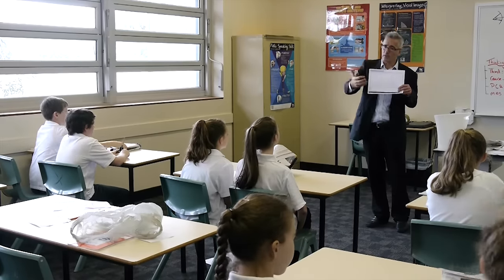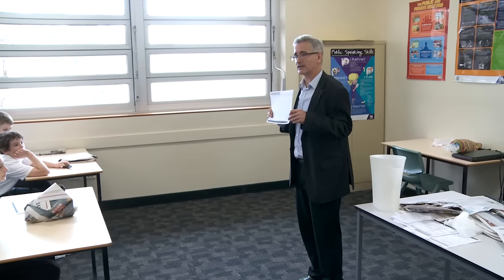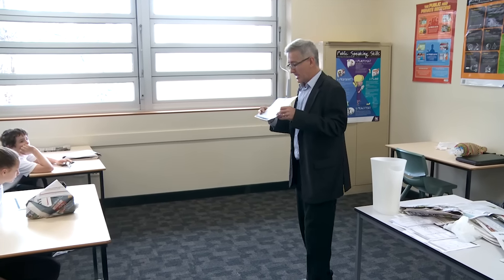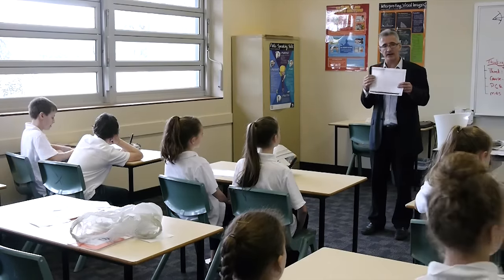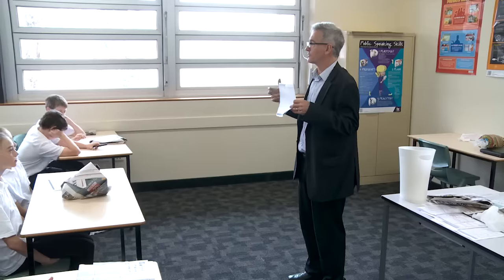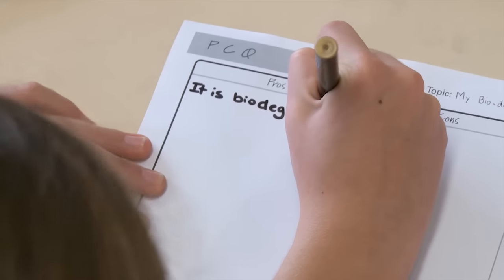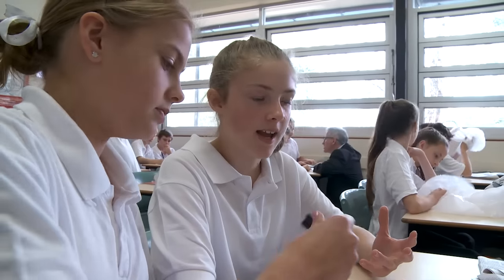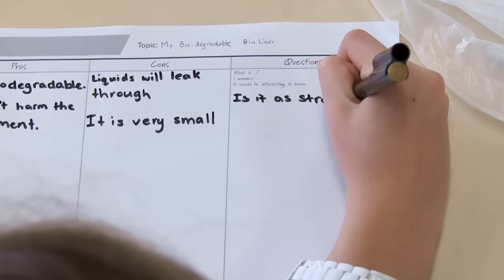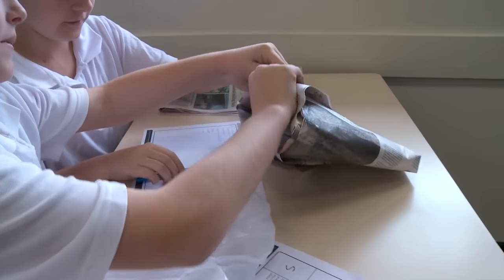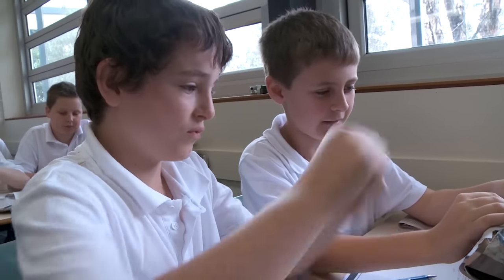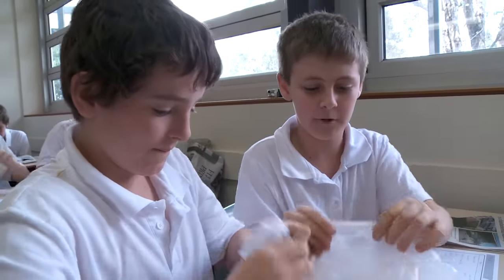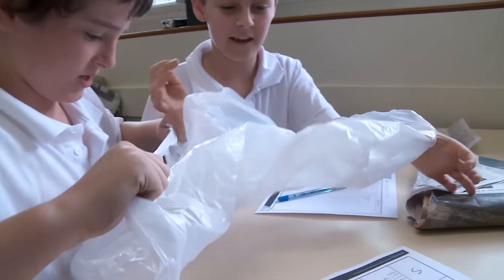We're going to use a pros, cons, and questions framework to analyse our bin liner and see whether we can improve. Is the material as strong as plastic? I'm even trying to rip it — that was really hard for me to do, and it didn't completely rip through, whereas plastic just tears.